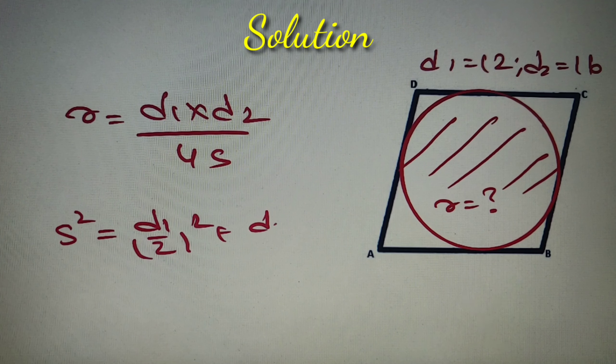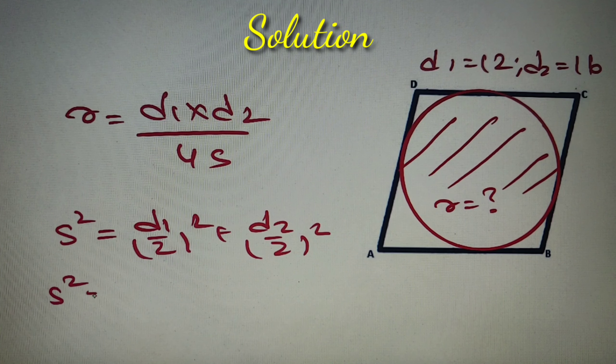In order to find the side of the rhombus we have another formula that is S square is equal to D1 by 2 whole square plus D2 by 2 whole square. So let us first find the side of the rhombus by this formula and then put that value in the above formula to find the in-radius.